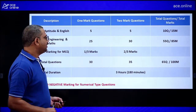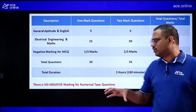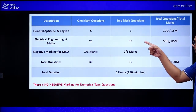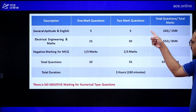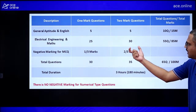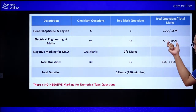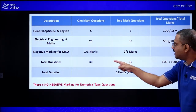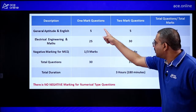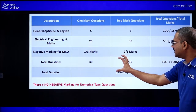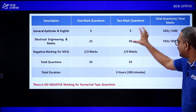The marks table to remember: General Aptitude — 5 one-mark and 5 two-mark questions, totaling 10 questions for 15 marks. Electrical Engineering subject — 25 one-mark and 30 two-mark questions for 85 marks. Grand total: 65 questions, 100 marks. Negative marking applies: one-third for one-mark questions and two-thirds for two-mark questions, approximately 33%.